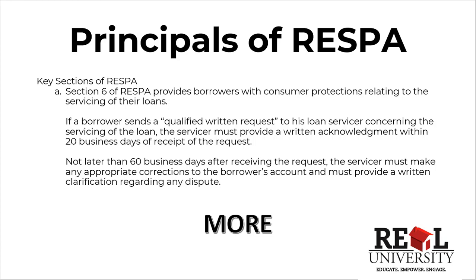Most of us, whatever profession you happen to be in, whether it's title, licensed mortgage loan originators, or real estate agents like myself that have a real estate license as well as a producer's license, we probably won't see a lot of the violations of Section 6 because it mainly deals with the consumer and the servicer post-closing.